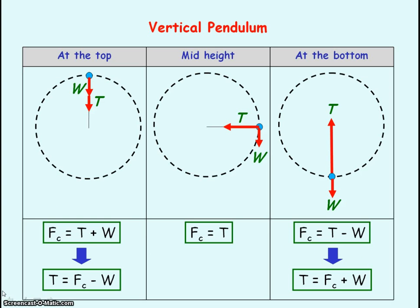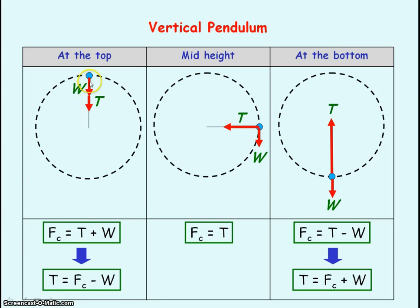For an object that is moving to form a vertical pendulum, it is similar to the loop-the-loop, except rather than the normal reaction force, we have the tension in the string. The tension in the string will have its lowest value when the object is at the top of the loop, because it is working with the weight to provide the centripetal force. But the tension has its greatest value when the object is at the bottom of the loop, as it is working against the weight to provide the centripetal force.